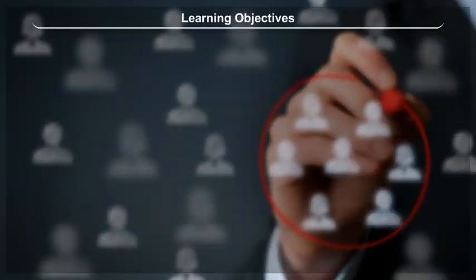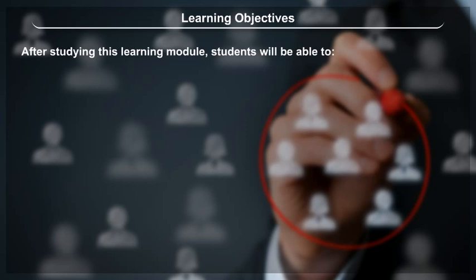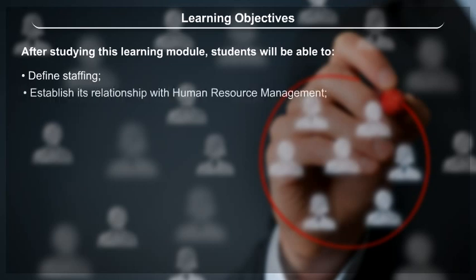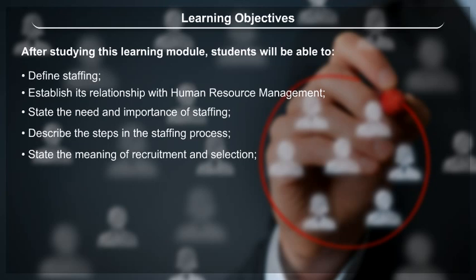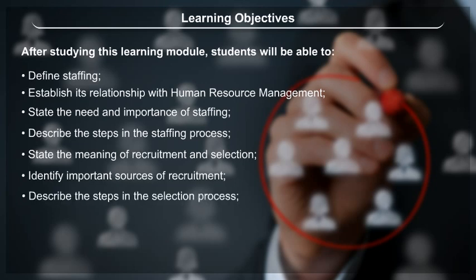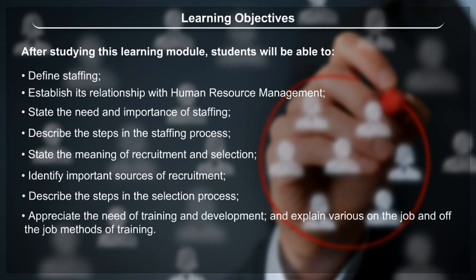Learning Objectives: After studying this learning module, students will be able to define staffing, establish its relationship with human resource management, state the need and importance of staffing, describe the steps in the staffing process, state the meaning of recruitment and selection, identify important sources of recruitment, describe the steps in the selection process, appreciate the need of training and development, and explain various on-the-job and off-the-job methods of training.